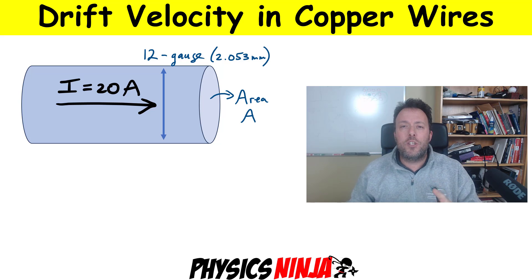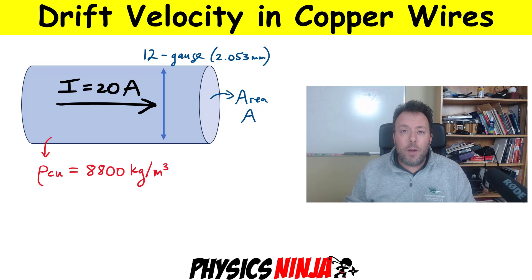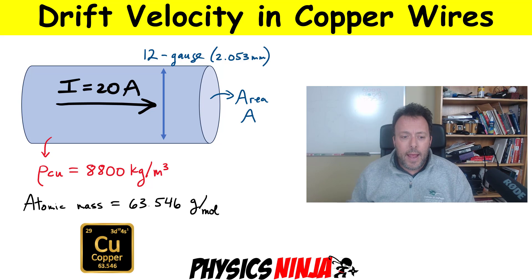We're first going to start with a quick summary of what drift velocity is and the key equations used to calculate it. I'm then going to consider the specific application shown here. I have a current of 20 amps flowing through a typical household wire with a certain diameter and cross-sectional area. Then I'm going to apply that to copper. Copper has a density of 8,800 kilograms per meter cubed and the atomic mass of copper is 63.546 grams per mole.